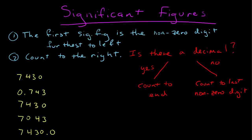So here I have 7.430. Go to the furthest to the left, that's here. Count to the right. There is a decimal, which means I count to the end: 1, 2, 3, 4. That has four significant figures.